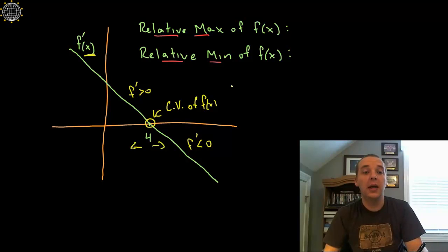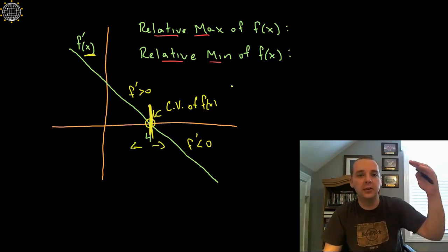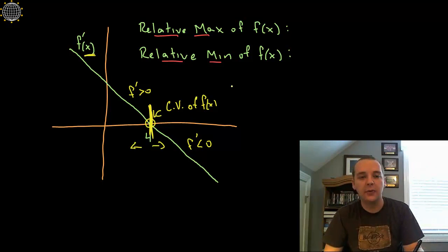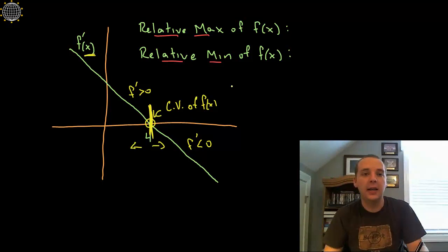So what does that reveal about F? Well before four, having positive derivatives means that it's increasing and then after four, having negative derivatives means that the original function is decreasing, indicating we've got ourselves a relative maximum at X equals four.